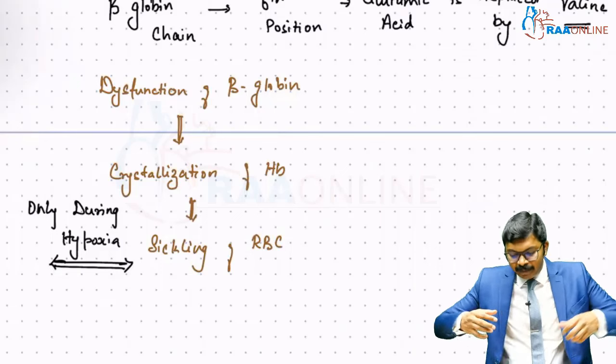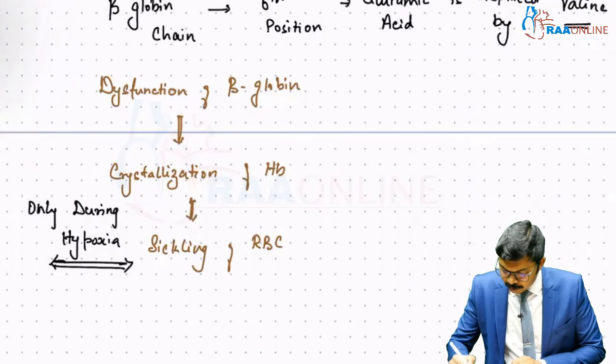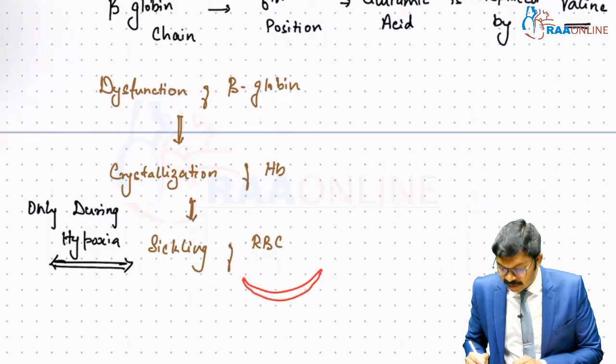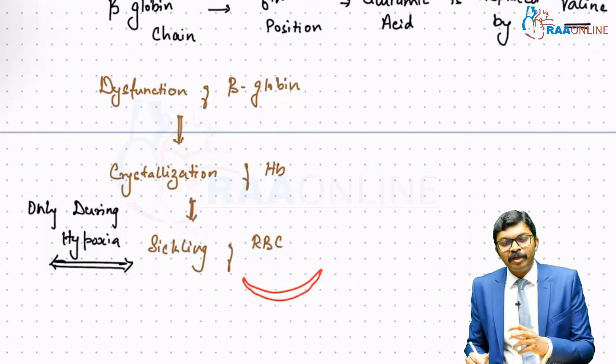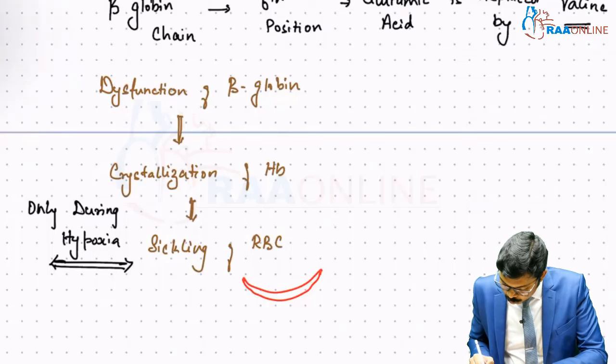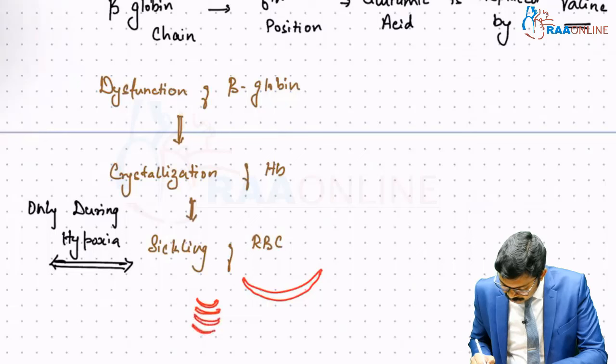As a consequence, the whole RBC membrane appears sickled. Now, because of this sickling, there is easy formation of RBC aggregates. You can clearly understand, one cell sits over the other and that sits over the third cell, fourth cell, fifth cell—easy formation of RBC aggregates.